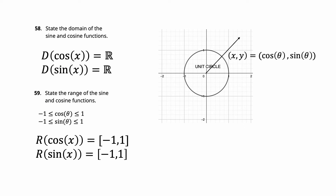State the domain of the sine and cosine functions. You can plug anything into sine and cosine — on the unit circle you can go around as many times as you want. But the output is bounded: cosine (which is x) never gets bigger than 1 or smaller than −1, and sine likewise. So the range is −1 to 1 for both. Cosine and sine are bounded — the range is [−1, 1]. The input is any real number; the output is just between −1 and 1.